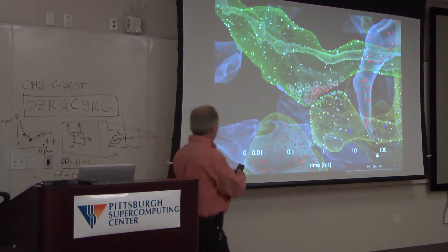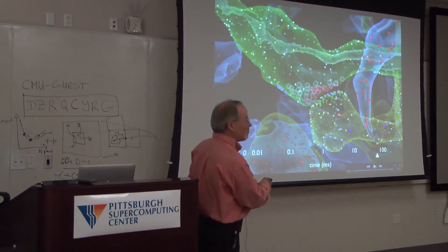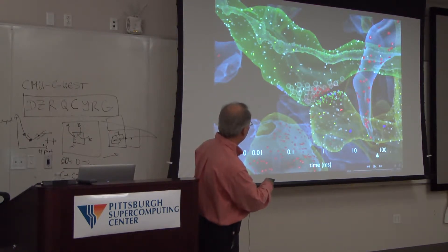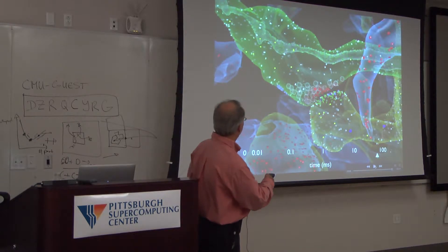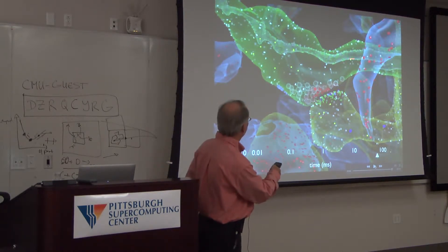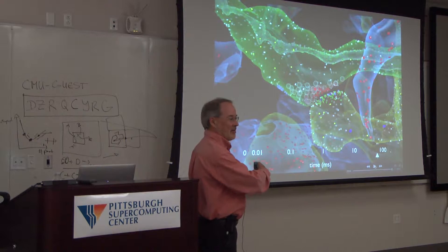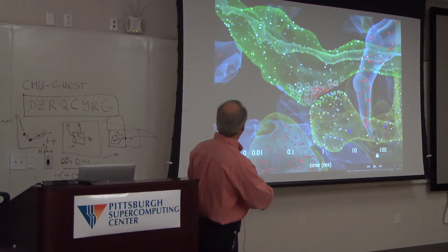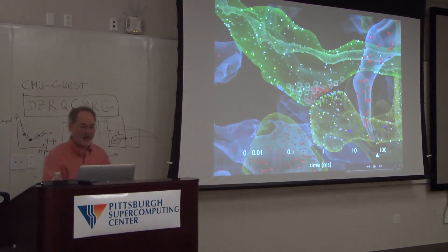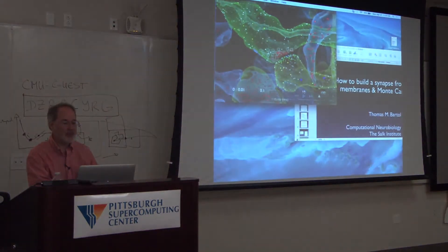The calcium has been getting pumped out by PMCA and NCX exchangers on the membrane — these little gray-colored transporters that pump calcium from the cytoplasm out. The endoplasmic reticulum has SERCA pumps on it — the little green particles — that sequester calcium into the endoplasmic reticulum. We have accurate kinetic models of all these different molecular species. That's what happens during a single action potential on one synapse.